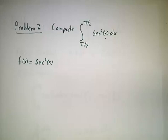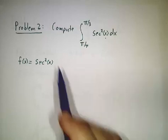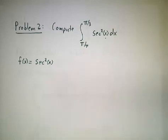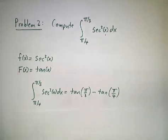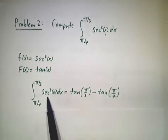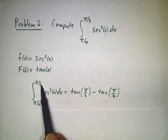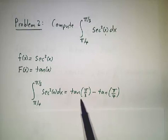Our function is secant squared, and you should remember that the derivative of tangent is secant squared. So to get the integral of secant squared from π/4 to π/3, you take tan(π/3) minus tan(π/4).